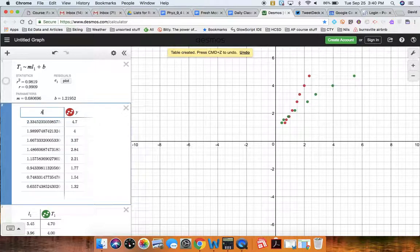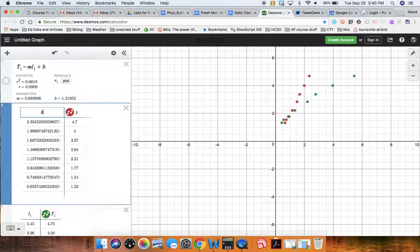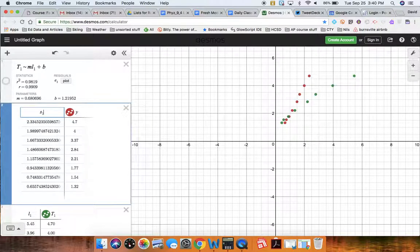I'm going to change X, which is really the square rooted L1s. I'm going to change that to S1, S for square root. And then for Y, those are periods. So I'm going to do capital T, and I'm going to use 2, because T1 is already taken.